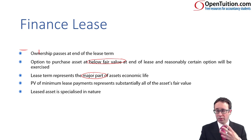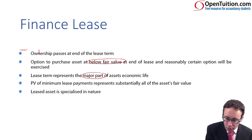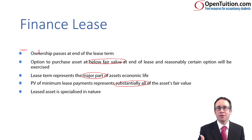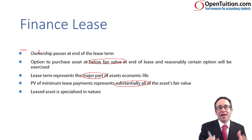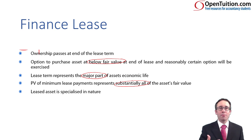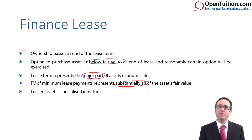The fourth scenario is that the present value of the minimum lease payments, when discounted, represents substantially all of the asset's fair value. In substance, if what the lessee is paying to the lessor over the lease period is essentially the value of the asset, then the lessee is effectively paying for the value of that asset — meaning it's their asset. We will treat it as a finance lease and, from the lessor's perspective, de-recognise the asset and recognise the receivable.